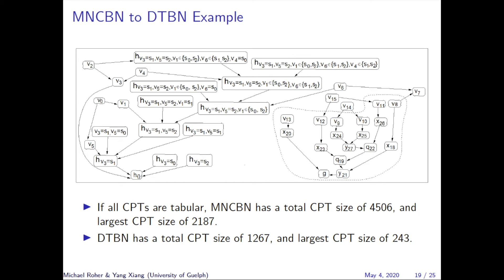Applying the inference framework to this MNCBN results in the following decausalized and transformed BN. While the resulting BN may appear more complex, significant savings are achieved: the MNCBN has a total CPT size of 4,506 and a largest CPT size of 2,187, whereas the DTBN has a total CPT size of 1,267 and a largest CPT size of 243.